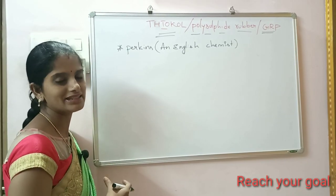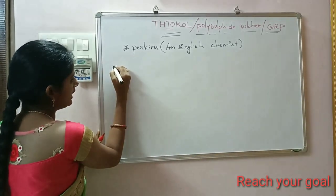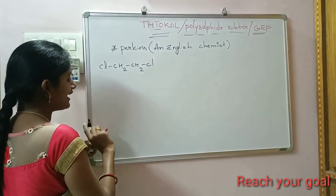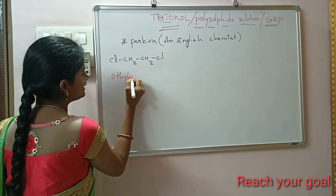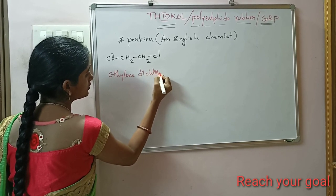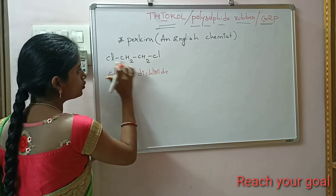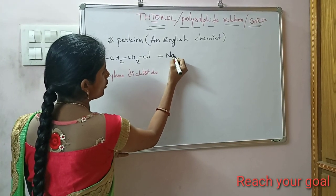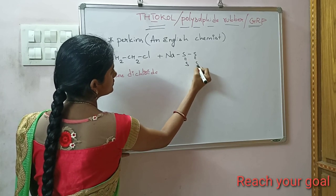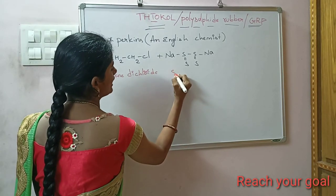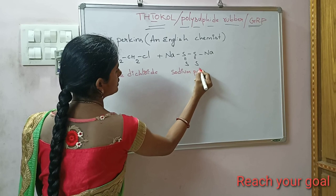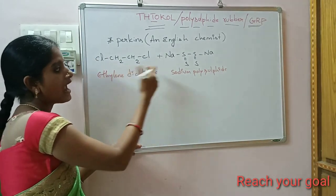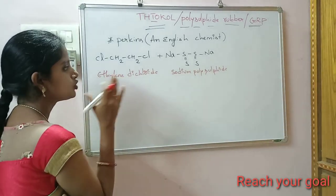Let me show the two different monomers. The first is ethylene dichloride, with the structure Cl-CH₂-CH₂-Cl — this is ethylene with two chloride groups, hence dichloride. The second monomer is sodium polysulphide. So there are two different monomer units in total.